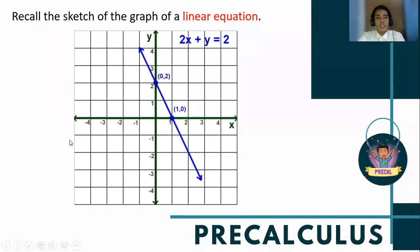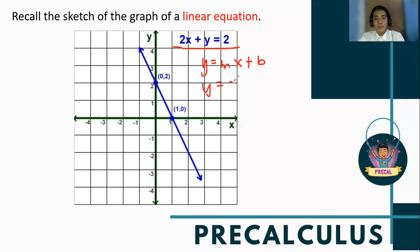Recall the sketch of the graph of a linear equation. Observe the given equation: 2x plus y is equal to 2. As you observe the graph, the sketch is a straight line which leans to the left. Because if we solve its slope-intercept form, y equals mx plus b, that becomes y is equal to negative 2x plus 2. Here m is equal to negative 2, so the slope is negative — that's why the graph leans to the left.